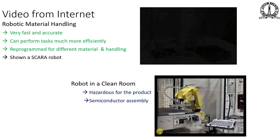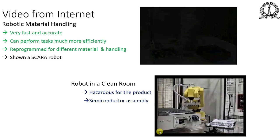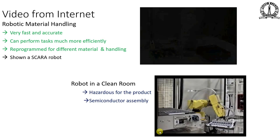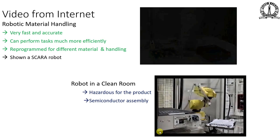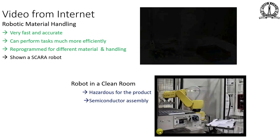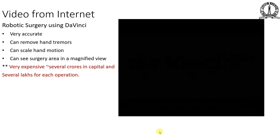A robot working in a clean room is shown next. Clean rooms are used in electronics and semiconductor assembly where human presence is hazardous to the product — humans generate dust and vapor that can fall on PCBs, chips, and wafers and spoil them. Therefore, robots are used extensively in semiconductor assembly clean rooms.